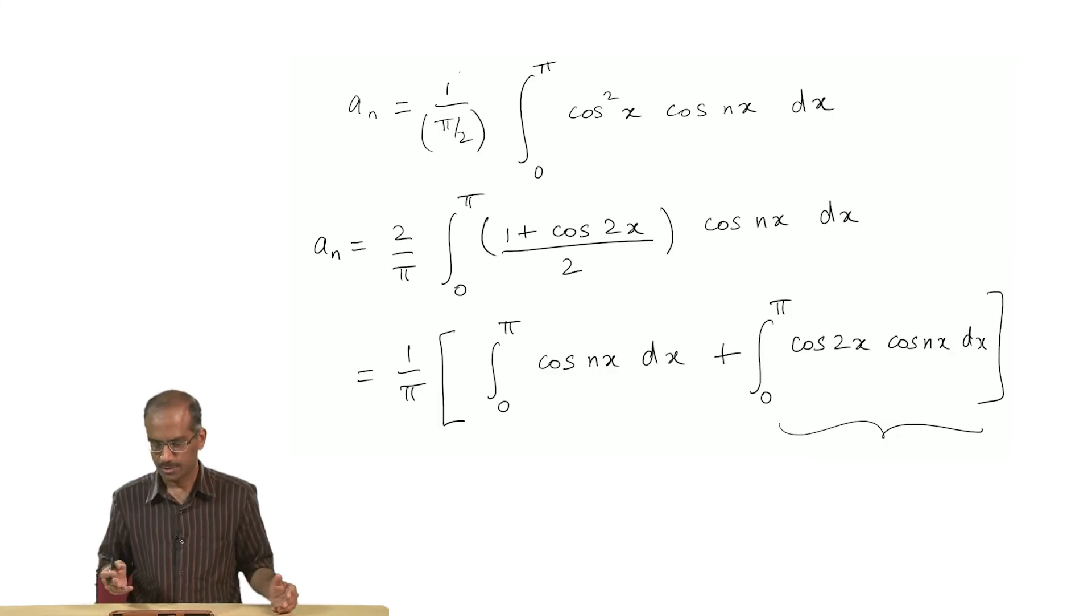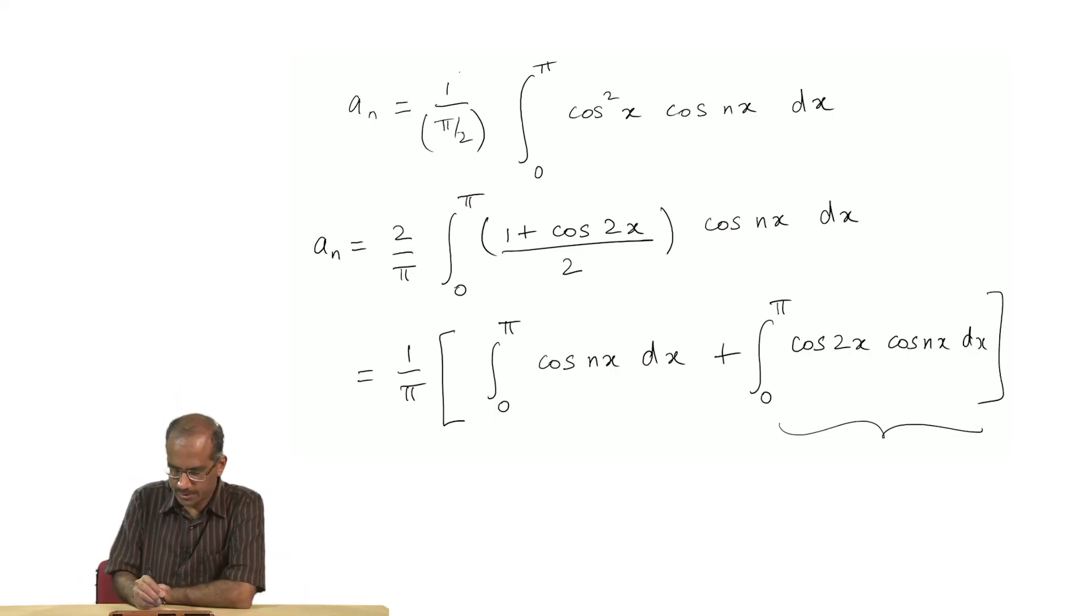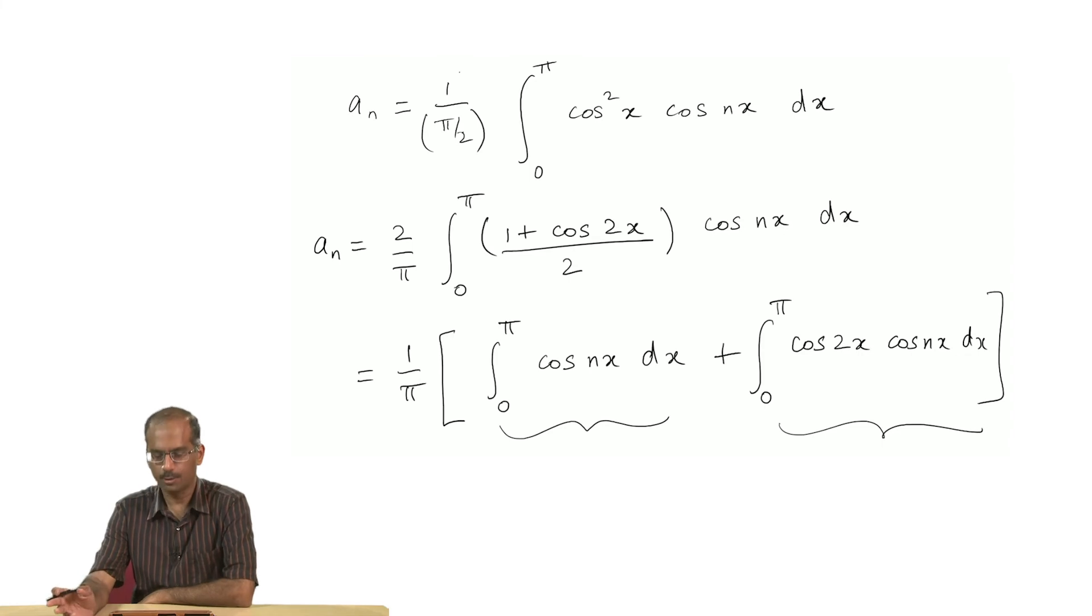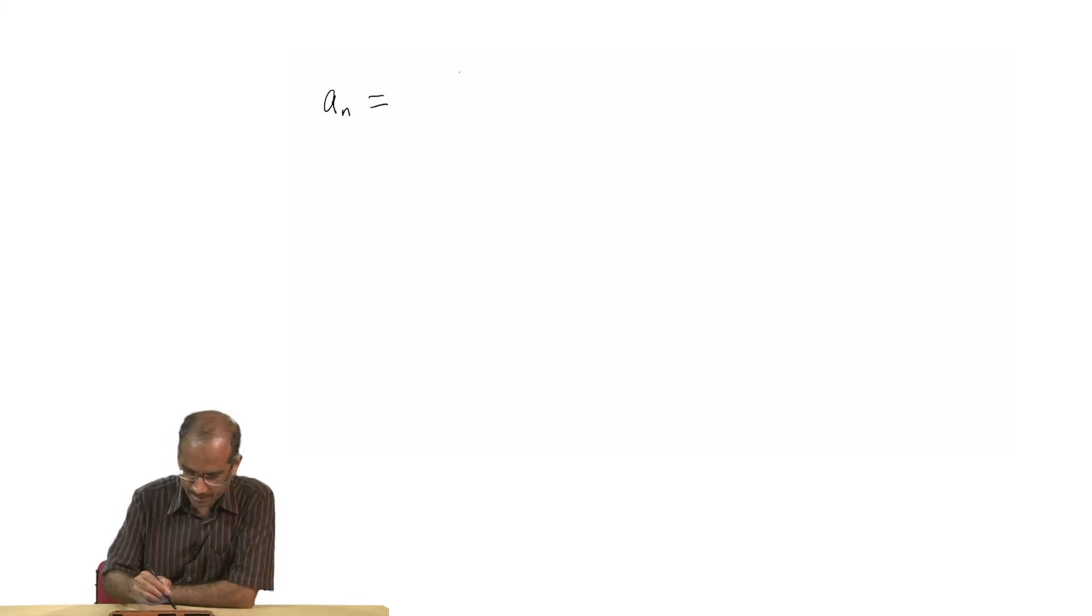In general, what is the integral of cos nx cos mx? The only term that would survive is when m is equal to n. Looking at this integral, it would appear that the only term that would survive from here is when n is equal to 2. And you can see that the first term here is an integral over cos nx that is going to give me sin nx divided by n.